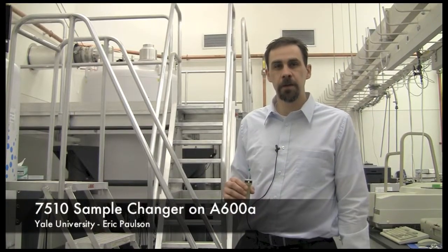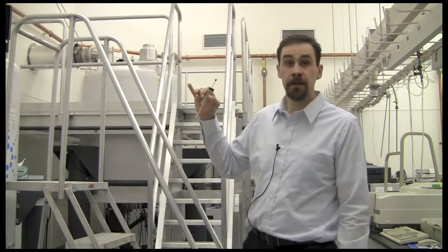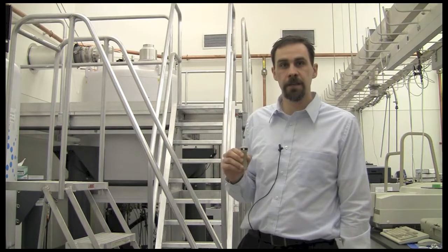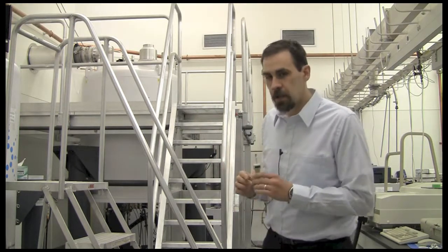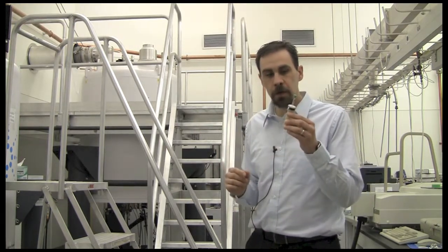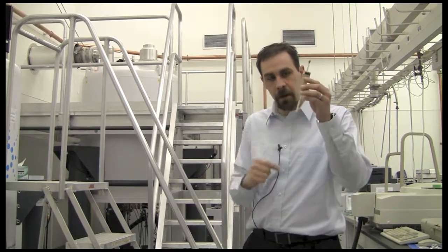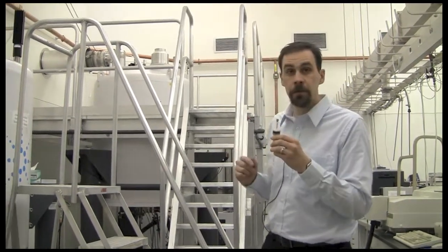This is an explanation of how to use the 7510 sample changer on the A600A. To use it, the first thing you should do is put your sample in the depth gauge and prepare it at the proper height before you go up to the sample changer.